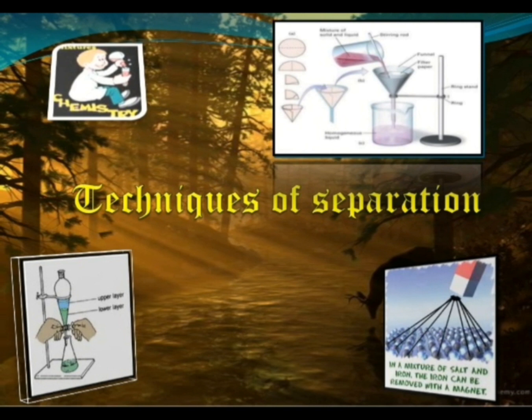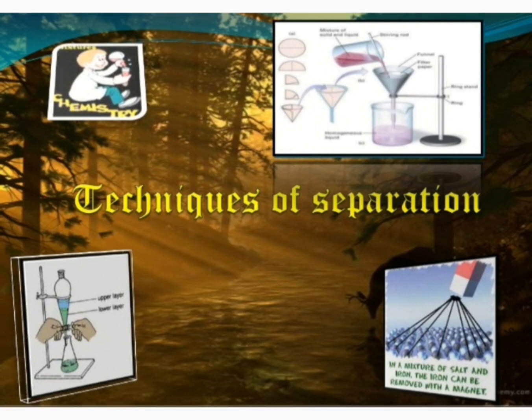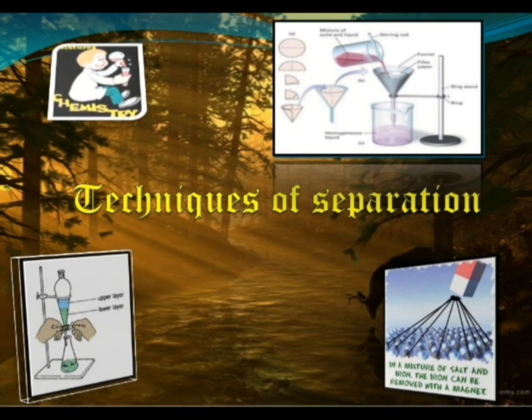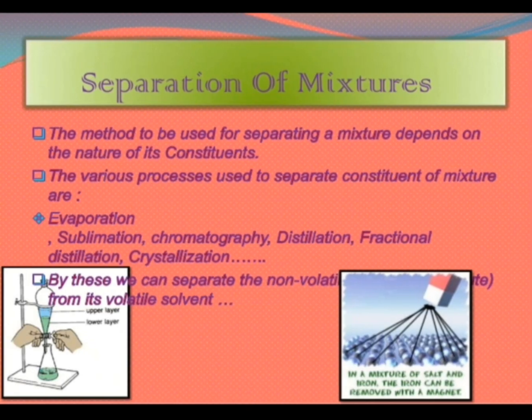The various constituents of a mixture will have different physical properties — they have different density, different solubility, different size of particles, different behavior towards the magnet, volatility, and boiling points. This difference in the physical properties of constituents is used to separate them from a mixture.